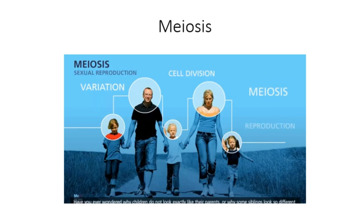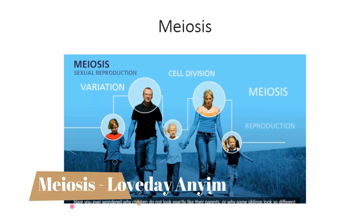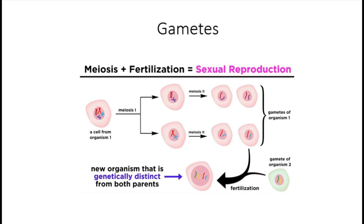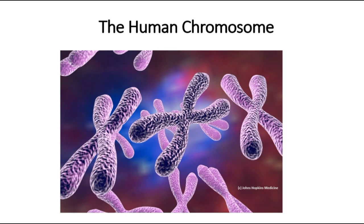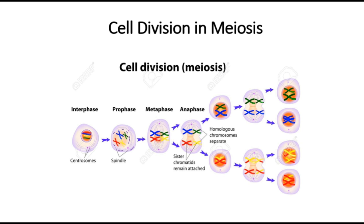Have you ever thought about how two siblings from the same parents can look different from each other? We'll be looking at the process which makes this possible, and that is called meiosis. Meiosis does not make or repair body cells, but makes sperm and egg cells, known as the gametes. Sperm and egg cells come together with 46 chromosomes, and this allows a newly formed fertilized egg to develop into a human. Meiosis is also referred to as the reduction cell division because you start with 46 chromosomes and end up with two separate cells of 23 chromosomes each. In meiosis, cell division happens twice.